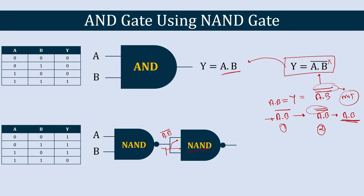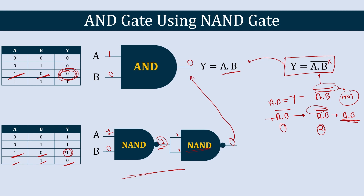To verify the circuit, let's take A = 1 and B = 0; the AND gate output should be 0. With A = 1 and B = 0, the first NAND gate output is 1 (since not both inputs are 1). Both inputs to the second NAND gate are then 1, so its output is 0. That matches the expected AND gate output, confirming the circuit is correct.